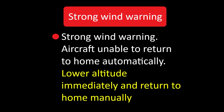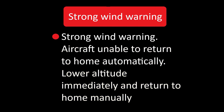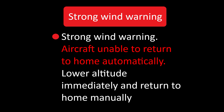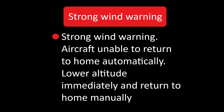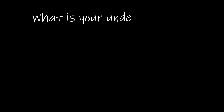The 'lower altitude and manual' part is fine and absolutely the correct way of handling wind, because the higher it goes, the stronger the wind. But for this sentence — 'aircraft unable to return to home automatically' — it's the one that seems to be confusing. What is your understanding of this particular sentence?